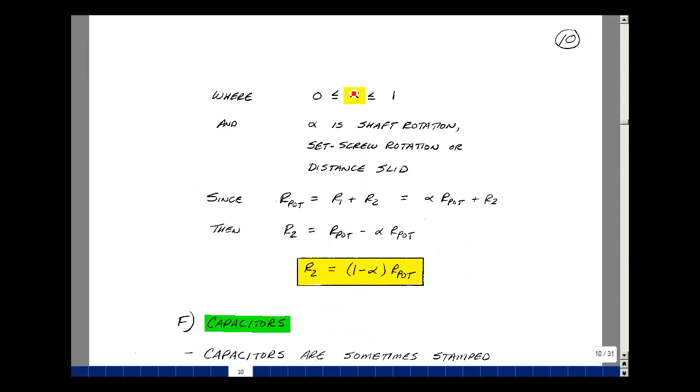So again, our value of alpha is between 0 and 1. This indicates the position of the shaft or the set screw or the slide that we're using. Now, the total potentiometer resistance we said was R1 plus R2, but we're saying that R1 is equal to alpha times R pot, a percentage of the total resistance. So then we can solve for R2.